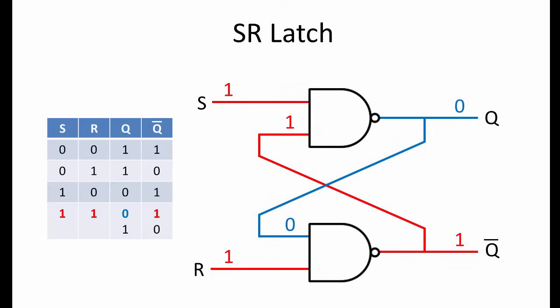An SR latch based on NAND gates also has a forbidden state. That is when both S and R are simultaneously 0. This would result in an illegal state in which both Q and its complement are 1.